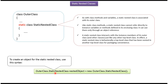This is how we can create an instance of a static nested class: OuterClass.StaticNestedClass, then object reference equals new OuterClass.StaticNestedClass open bracket and close bracket.